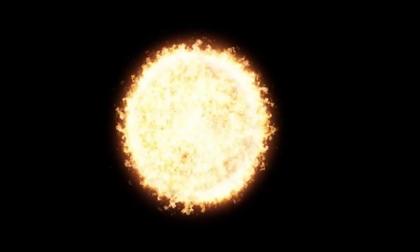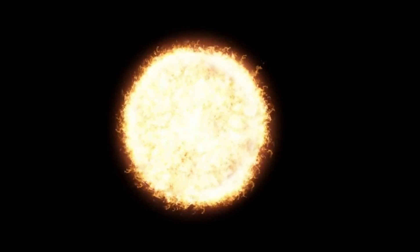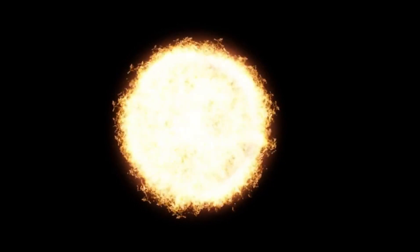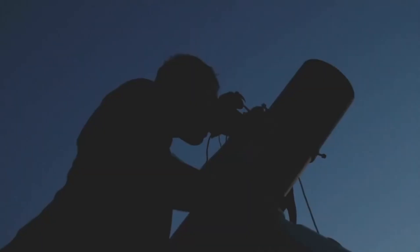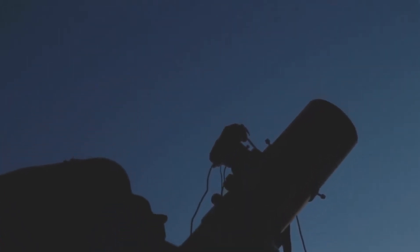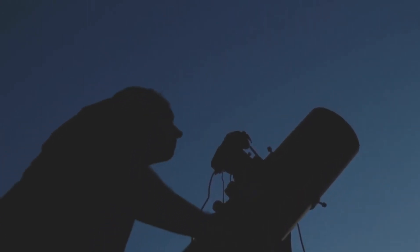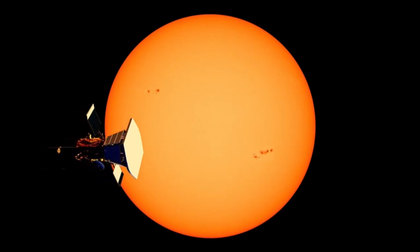Its current red supergiant phase is the culmination of millions of years of stellar evolution, a period marked by dramatic changes and processes that have transformed it from a hot, blue star to the red giant we see today. The life cycle of stars like Betelgeuse is a story of transformation, driven by the relentless forces of nuclear fusion and gravity.